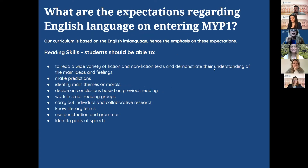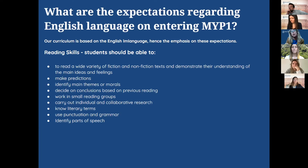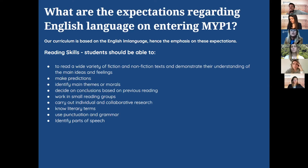Because all lessons are in English, there's a focus predominantly on English language. We would expect students coming through the PYP system to already have these skills in place; if not, this is what we aim to achieve by the end of MYP1. In terms of reading skills, students should be able to read a wide variety of fiction and non-fiction texts, demonstrate understanding of main ideas and feelings, make predictions, identify main themes or morals, work in small reading groups, carry out individual and collaborative research, have knowledge of literary terms, and use punctuation and grammar.